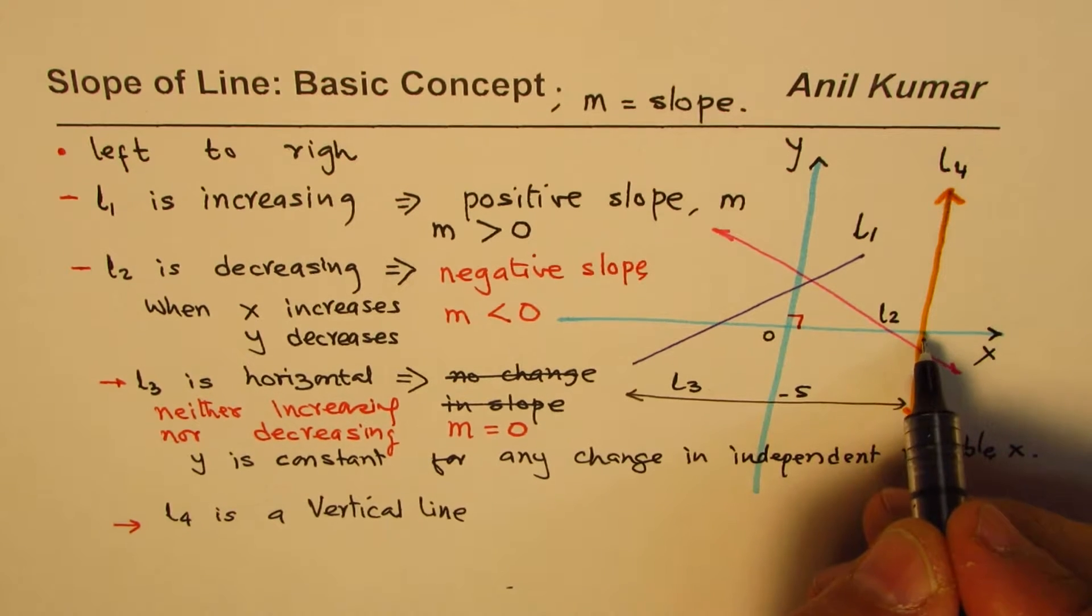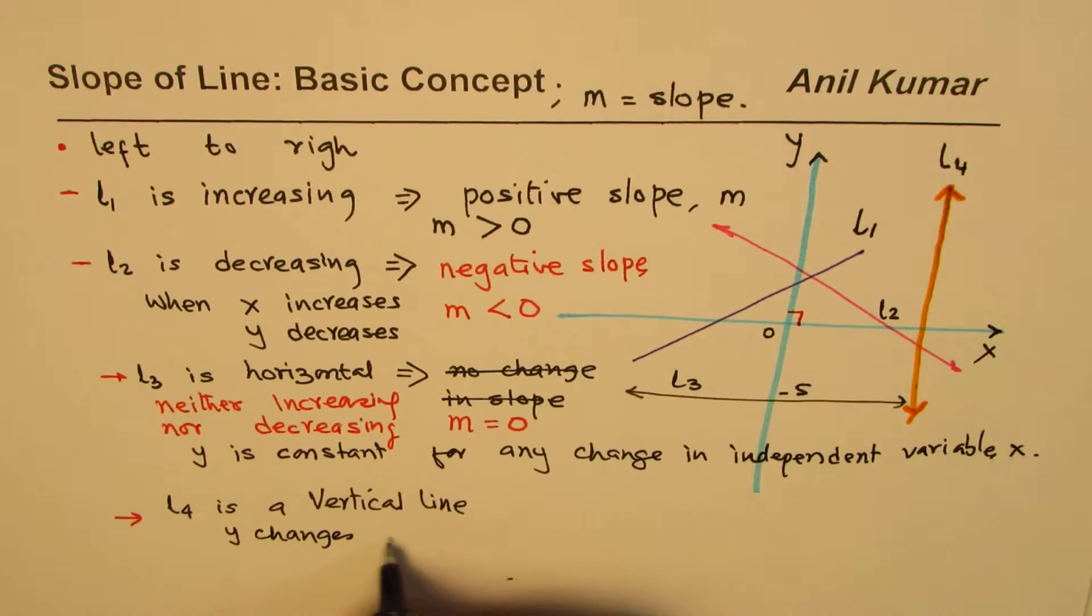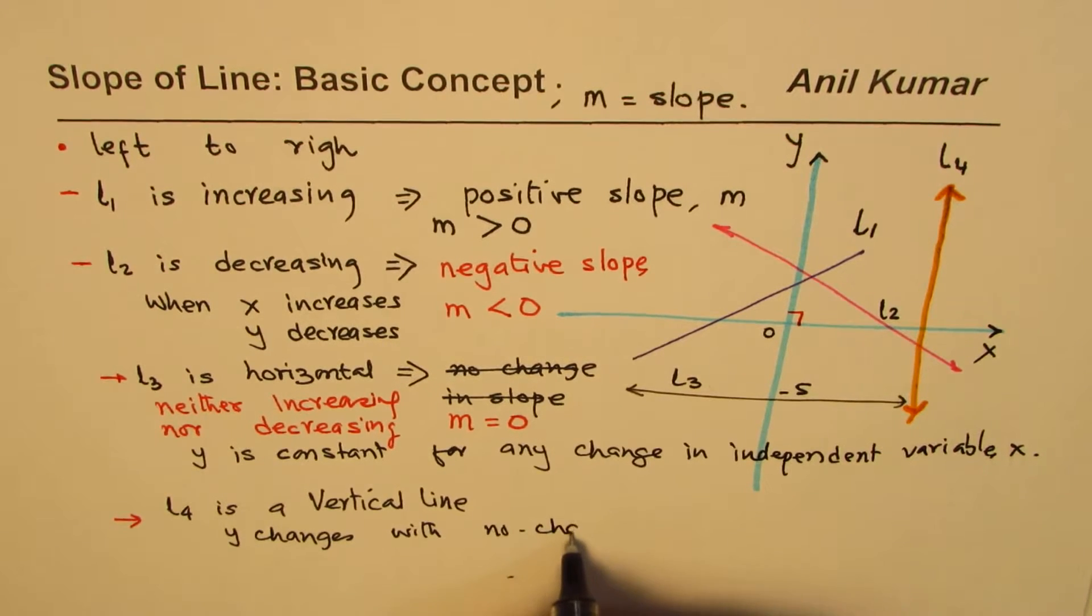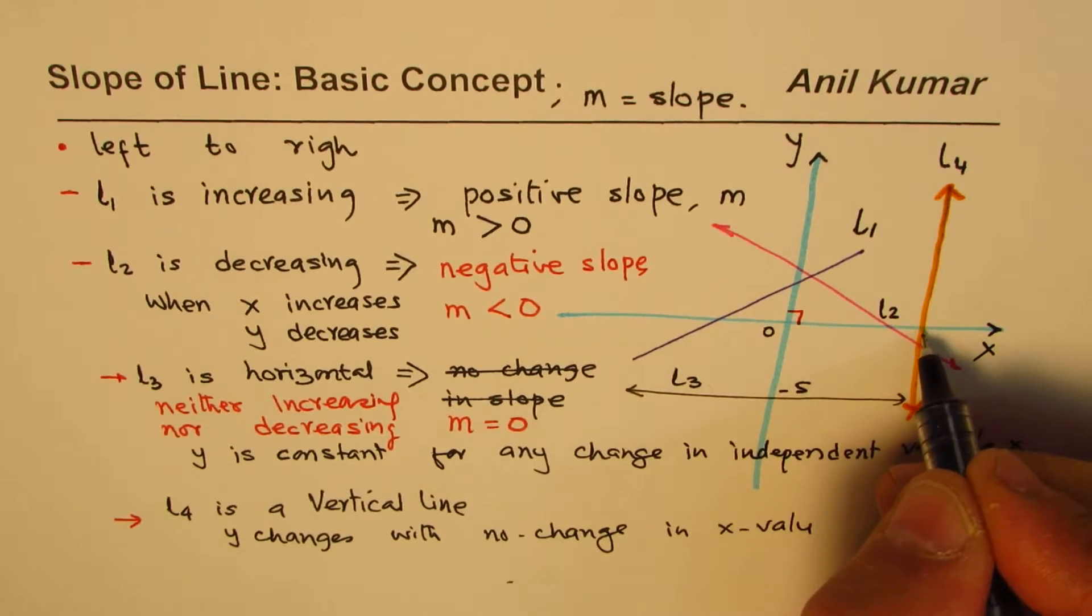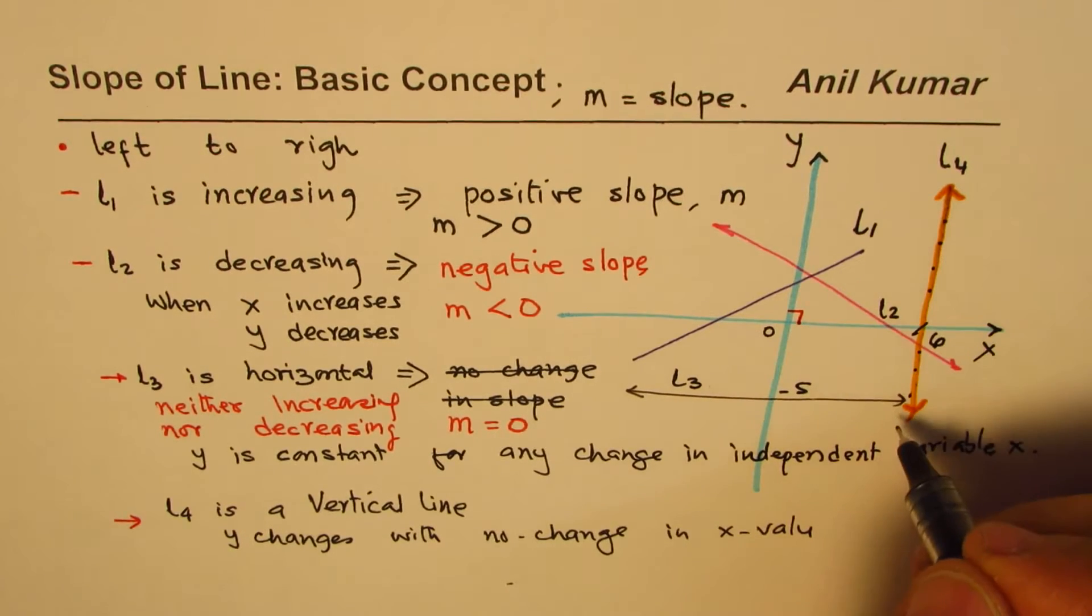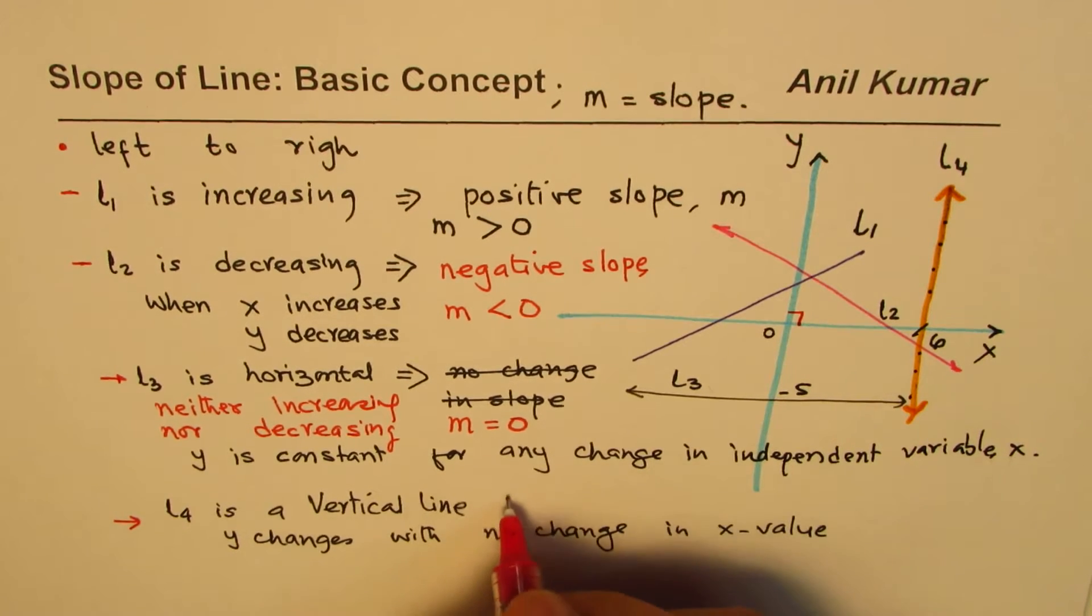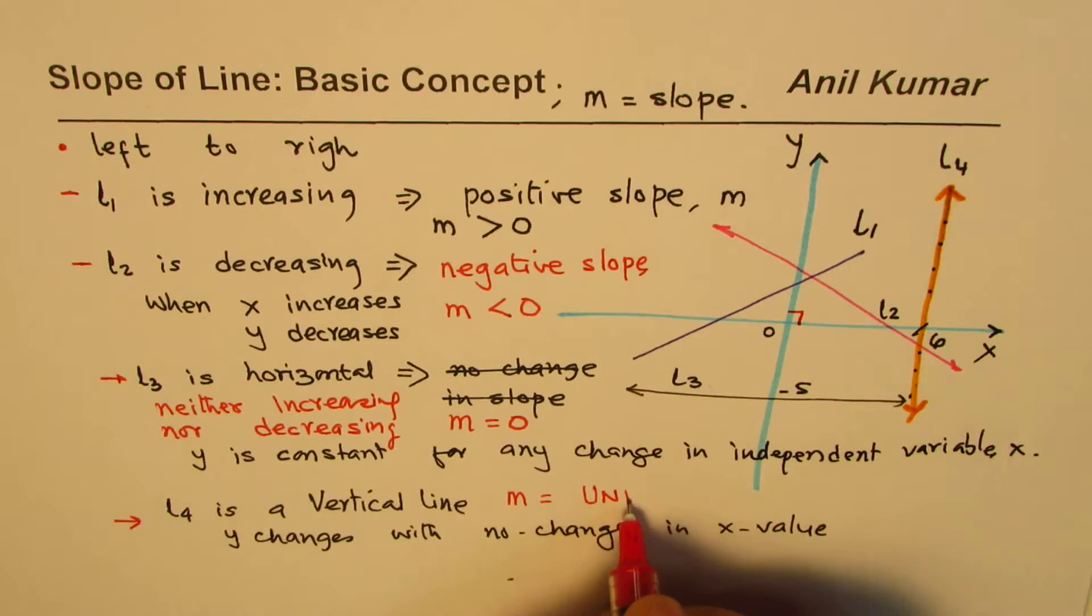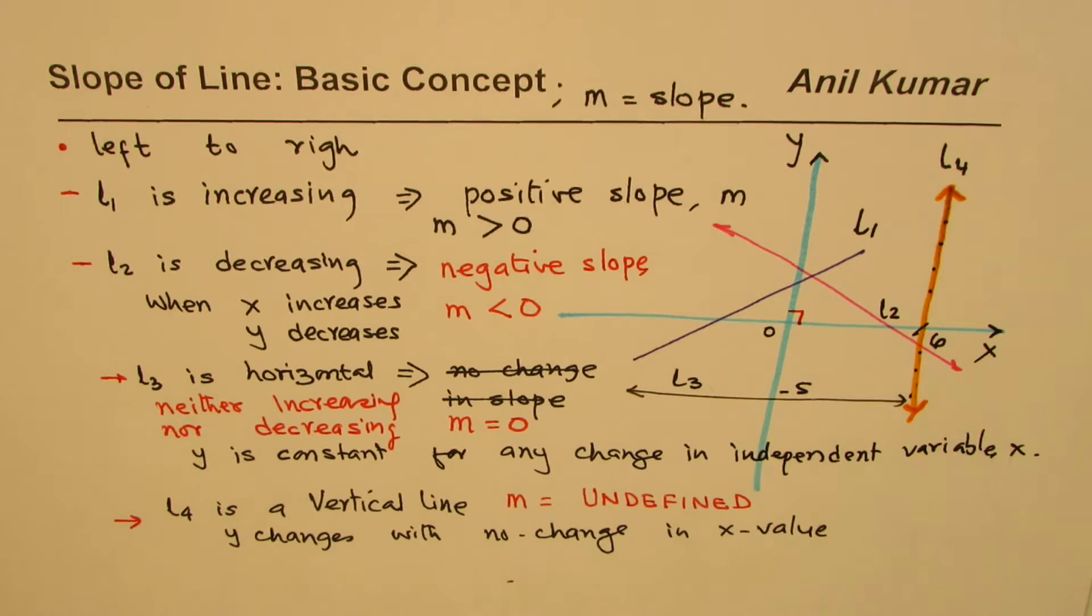Now how about slope of this? It is standing like a wall. Really speaking, X value does not change. Y changes. Do you see Y changes? With no change in X value. X value is just 1, for example. Let us say this value is 6. X remains 6 for any point on this line. Any point on this line. So slope does not change for any X value. In such cases, we say that our slope M is undefined. The slope M is undefined.